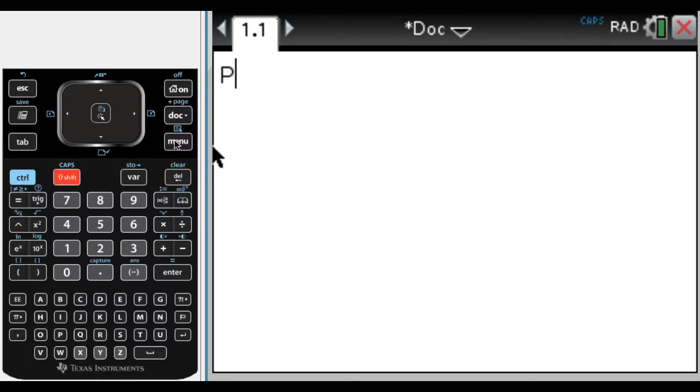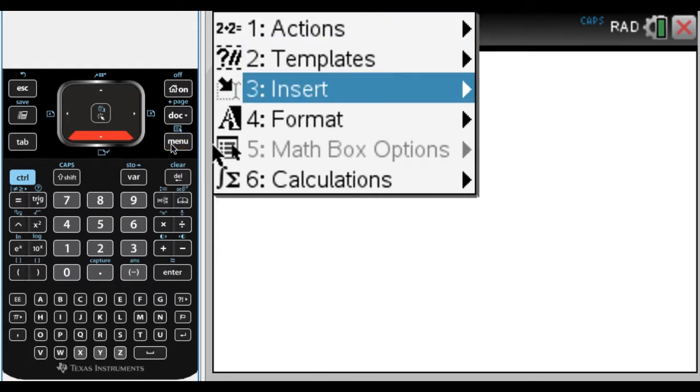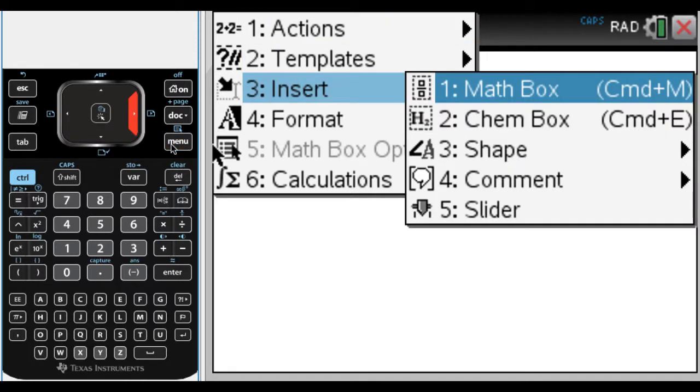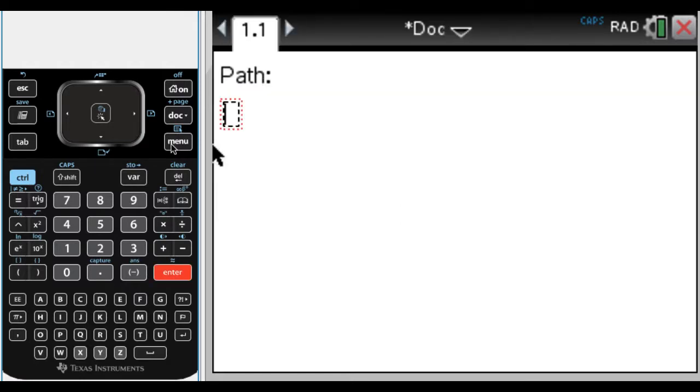First what I'm going to do is set it up so that I can tell it what the path is. To do that, I'm going to use a math box. So it's menu three, I need to insert a math box. For me, I can just press command M to quickly get those. I'm going to tell it what X is equal to. Notice I'm not doing X of T, I'm just doing X colon equals.